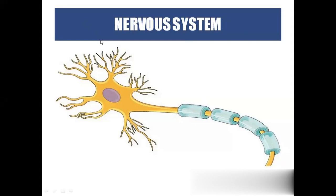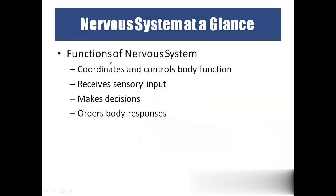Today our topic is about the nervous system. The nervous system is a very important system in our body. The whole controlling mechanism of our body lies in only two systems: one is the nervous system and the other is the hormonal system, or endocrine system. The nervous system controls our body with electrical stimuli, and the endocrine system controls our body through hormones. These two are separate systems which control our body, controlling everything in different ways.